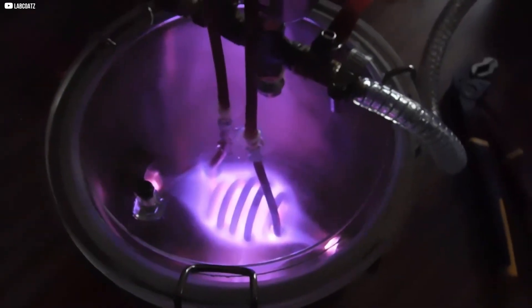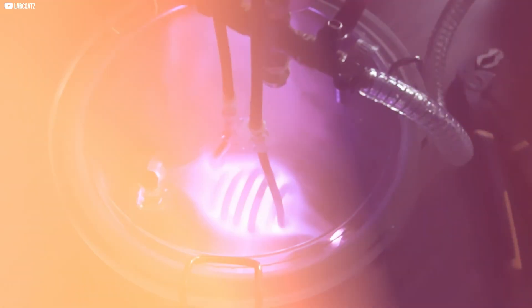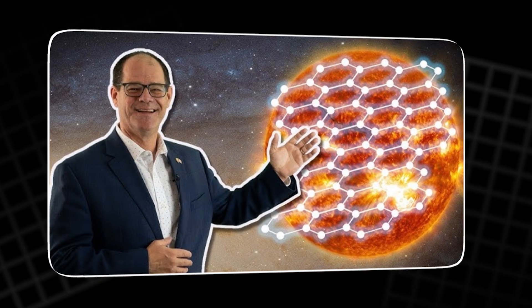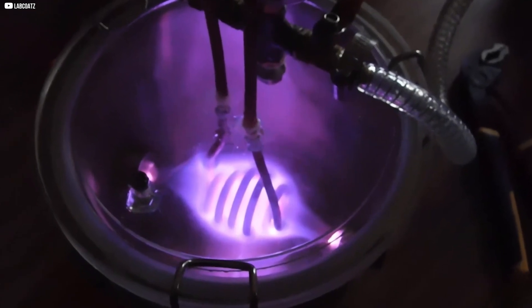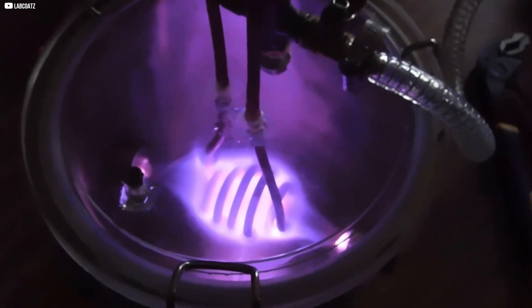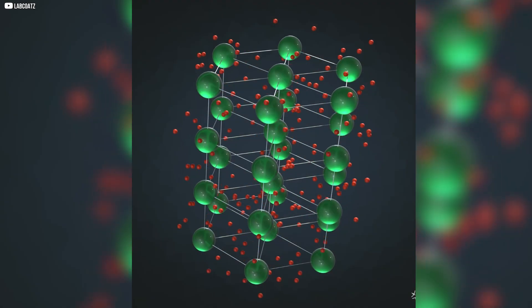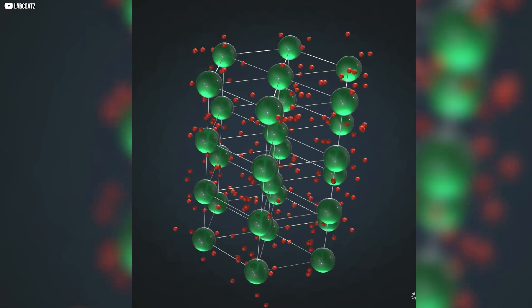Inertial electrostatic confinement (IEC) and lattice confinement fusion (LCF). Think of IEC as a way to get particles moving fast. It uses electric fields to accelerate ions until they collide and fuse. It's like giving those atoms a running start up the hill.